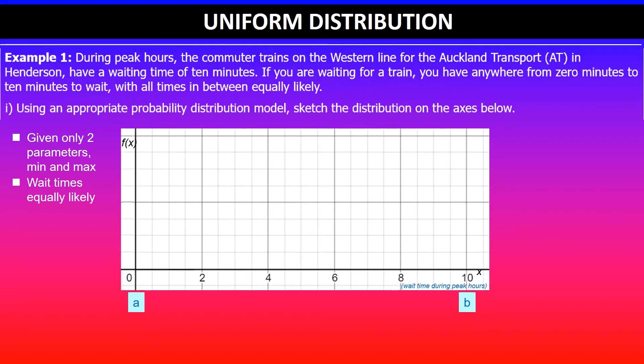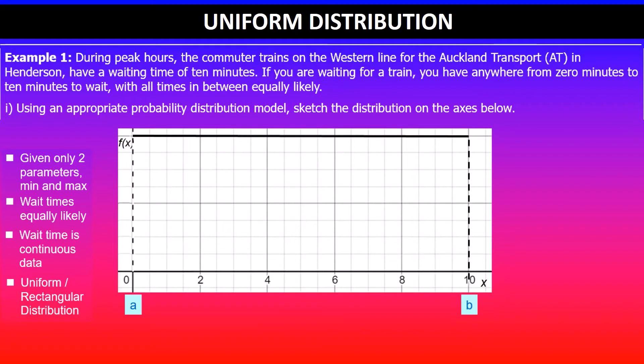Equally likely means the probability is the same between a and b. We also know that wait time is continuous data, so from this information we know it is a uniform or rectangular distribution. We'll sketch this: a value is zero and b value is 10, minimum and maximum. Then we connect these two by drawing a horizontal line joining a and b.